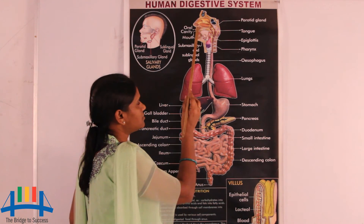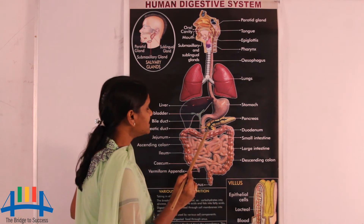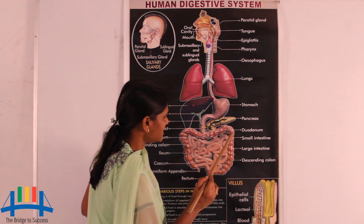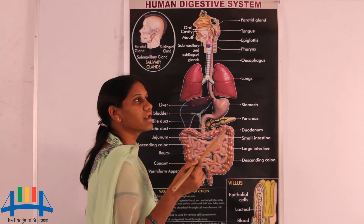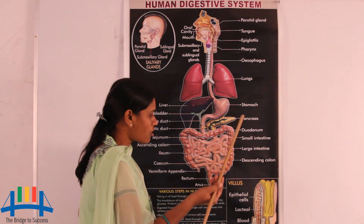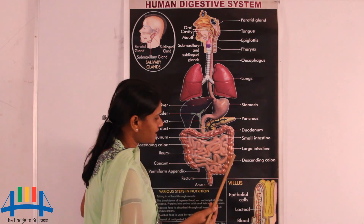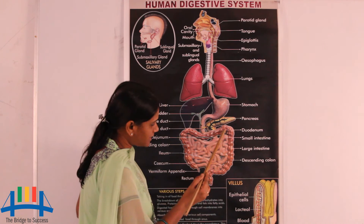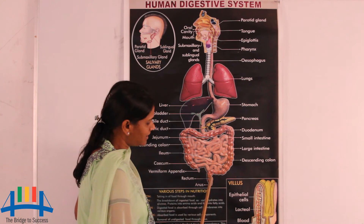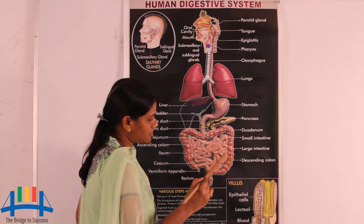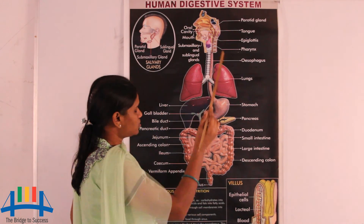The large intestine absorbs excess water from the partially digested food. The remaining unwanted material is sent out through the rectum and anus. Both the rectum and anus help in sending undigested food out of the alimentary canal — completing the journey from mouth to anus.